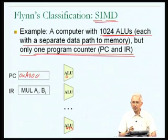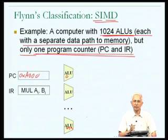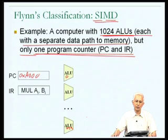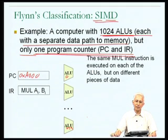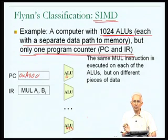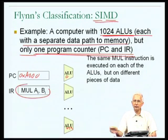One can clearly see such a computer being useful for operations on vectors. There are machines called vector supercomputers which operate very much in this mode, as do many graphics processors found in laptops or desktops. SIMD parallel computers are fairly widespread. The same multiply instruction is executed on each of the ALUs but on different pieces of data, allowing an operation on an entire vector to happen as a single instruction with individual vector elements computed in parallel.